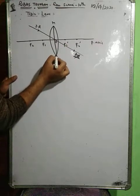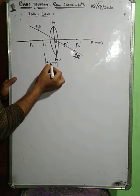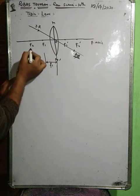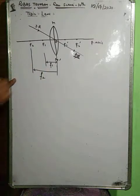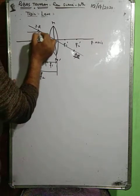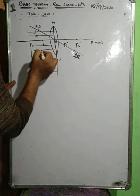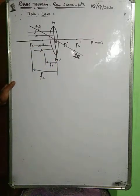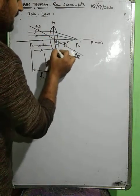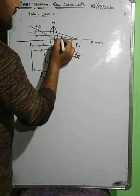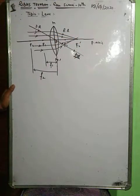The distance from this optical center to focus F1 is focal length first; the distance to focus F2 is focal length second. When a parallel beam of incident light rays is allowed to fall on this convex lens, after refraction these rays converge and meet at one point on the principal axis — that point is known as F2, second focus.